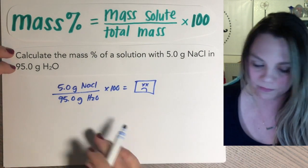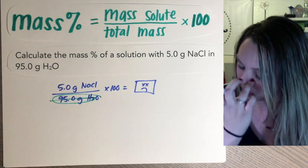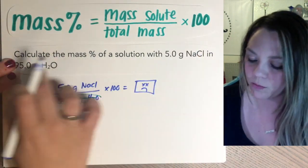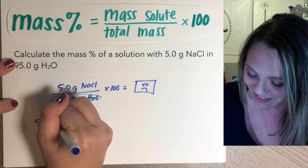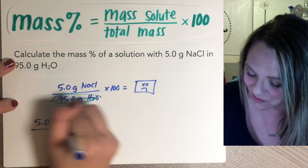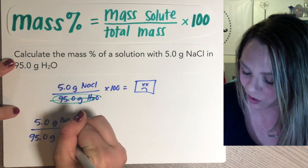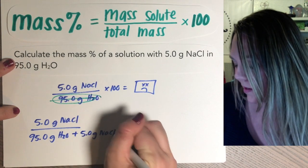Hopefully you can see, right, this is not the total mass. Your total mass is 5 plus 95, your solute plus your solvent. So it's like the easiest type of problem ever, right? 95.0 grams of your water plus the 5 grams of NaCl.